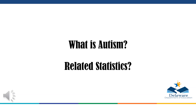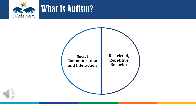I will begin with the definition of autism and share some related statistics. Throughout this session, I will use the words autism, ASD, and autism spectrum disorder interchangeably. According to the Diagnostic and Statistical Manual of Mental Disorders, also called the DSM-5, autism is a neurodevelopmental disorder that affects social communication and interaction as well as the presence of restricted and repetitive behaviors or interests. It is usually diagnosed in early childhood and its symptoms can vary in severity from one individual to another.